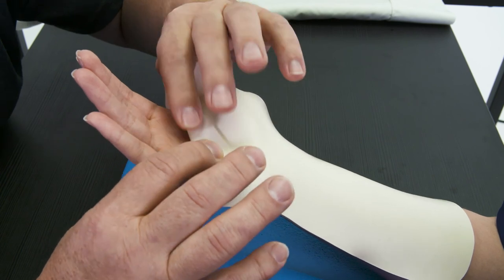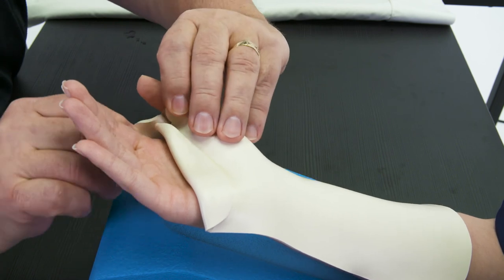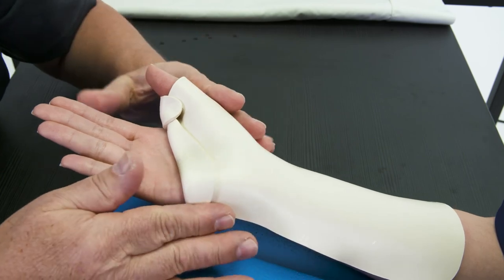Wrap the peninsula of the pre-cut around the thumb with the border of the material slightly distal or at the IP joint. Gently press the distal end of the peninsula against the underlying splint material, providing a temporary tack.